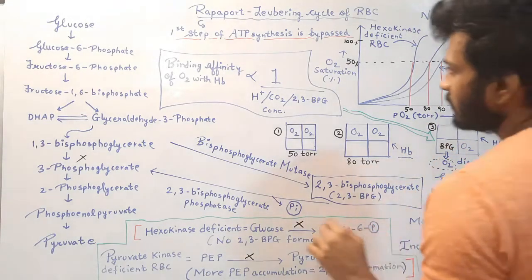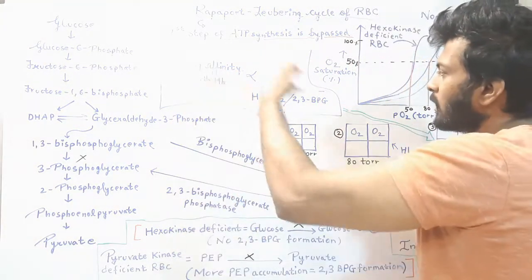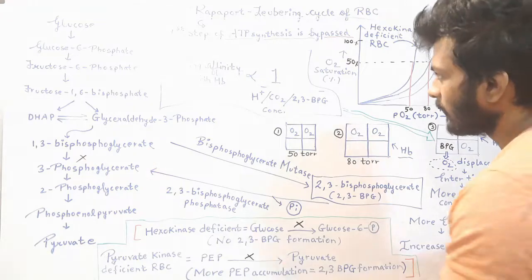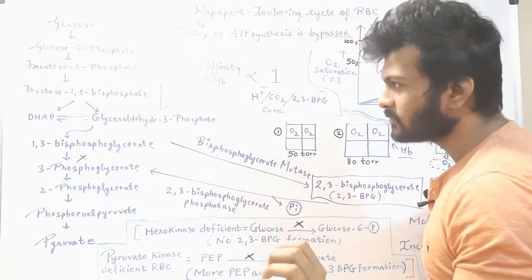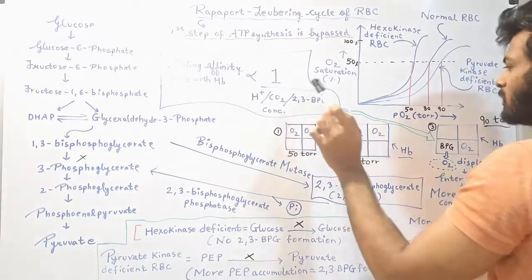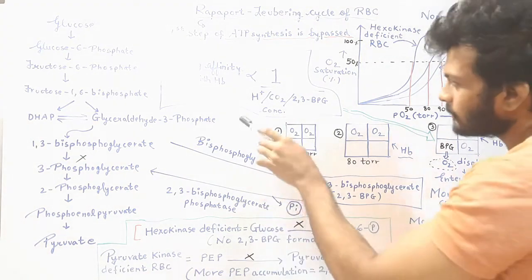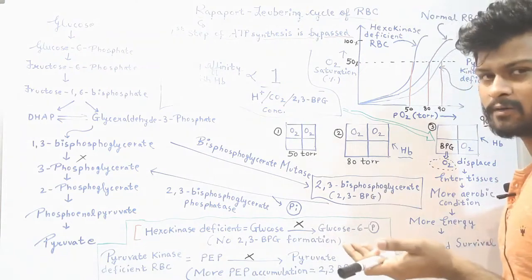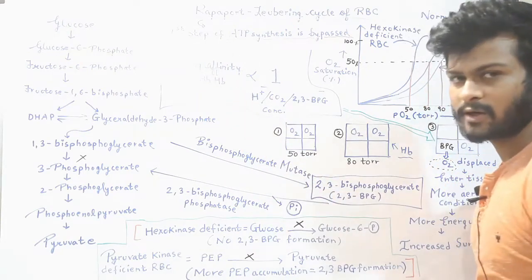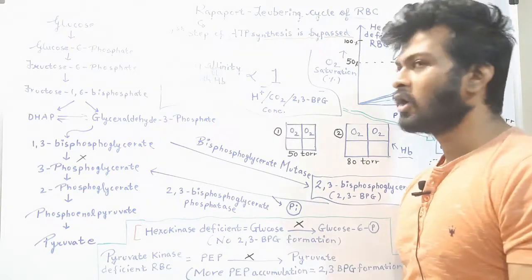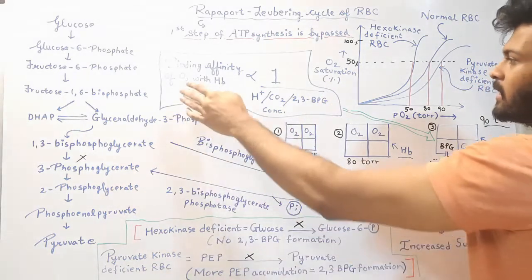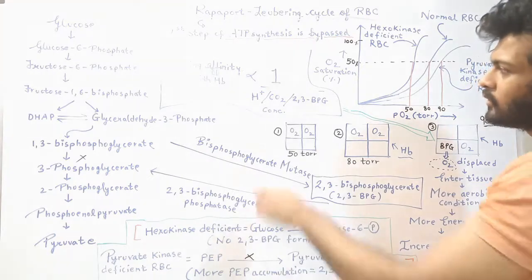With the first step of ATP synthesis bypassed, we see that binding affinity of oxygen with hemoglobin is inversely proportional to the concentration of H⁺ ions, CO₂ concentration, and 2,3-BPG concentration. If H⁺ ion concentration increases (i.e., pH decreases), binding affinity of oxygen with hemoglobin will decrease. Similarly, if CO₂ concentration increases, or if 2,3-BPG increases, binding affinity of oxygen with hemoglobin will decrease.